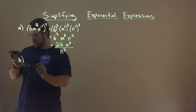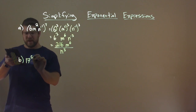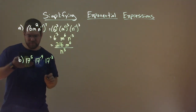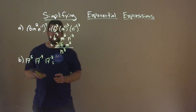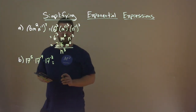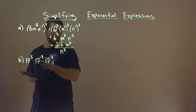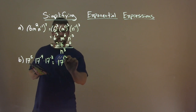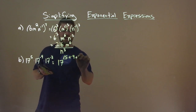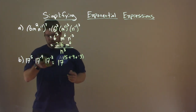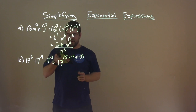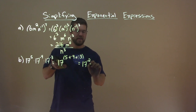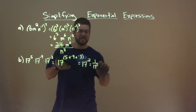Let's go with b. We have 17 to the 5th power times 17 to the negative 4th power times 17 to the negative 3rd power. This one's actually not too bad. Notice we have the same base across the board. Since we have the same base being multiplied, we just really have to add the exponents. So we have 17 to the power of 5 plus negative 4 plus negative 3. Well, 5 plus negative 4 is 1, plus negative 3 is negative 2. So we have 17 to the negative 2 power, which is 1 over 17 squared — don't forget that.